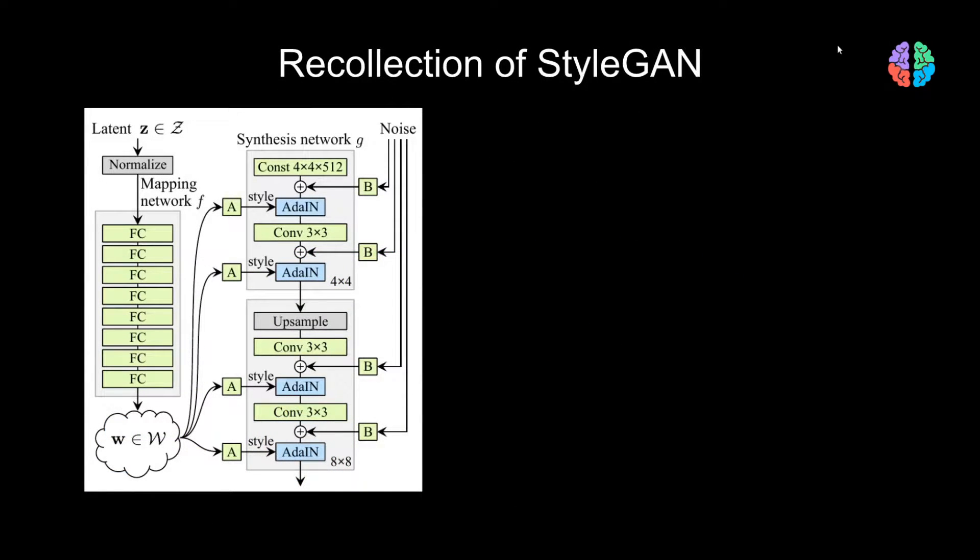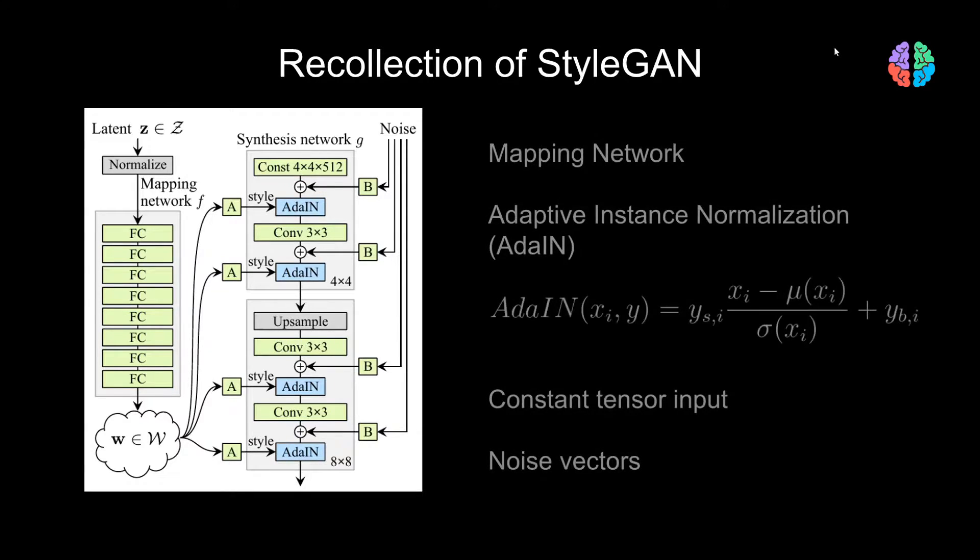Let's quickly recollect the StyleGAN architecture and its components before going into StyleGAN2. StyleGAN consists of four components. The mapping network which encodes the latent noise Z into the space W.